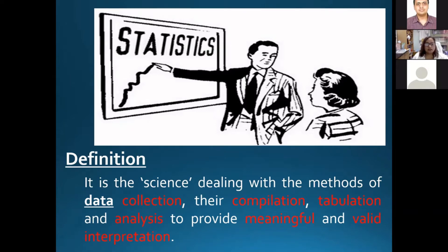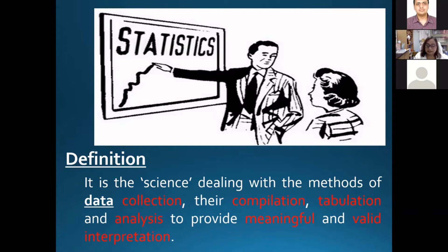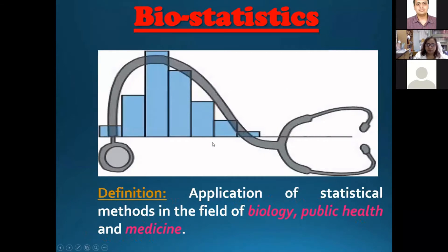Biostatistics is a part of the study since its inception, starting from data collection till the final interpretation of the results. We calculate sample size so that our study has adequate power and we can interpret our results meaningfully. We also try to validate our study tools using statistical methods. So the role of statistics starts from the beginning of the study — data collection, compilation, tabulation, analysis — to provide the results or interpretation. When we apply these statistical methods in biology, public health, or medicine, it is called biostatistics.